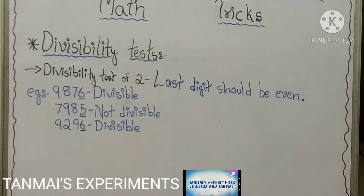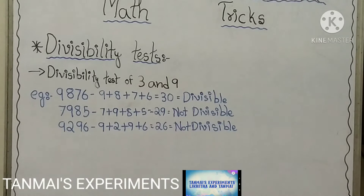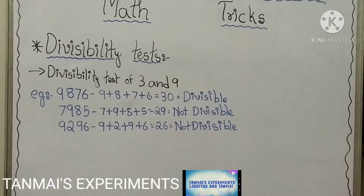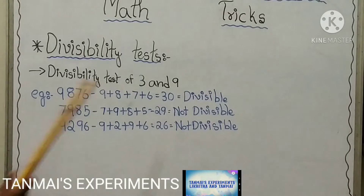Now let's see the divisibility test of 3. Note that the divisibility test of 3 and 9 is the same method. The divisibility test of 3 is that from the given number you have to add all digits, and if the sum is divisible by 3, then the entire number is divisible by 3. For example, 9,876: 9 plus 8 plus 7 plus 6 equals 30, and 30 is divisible by 3, so the entire number 9,876 is divisible by 3.